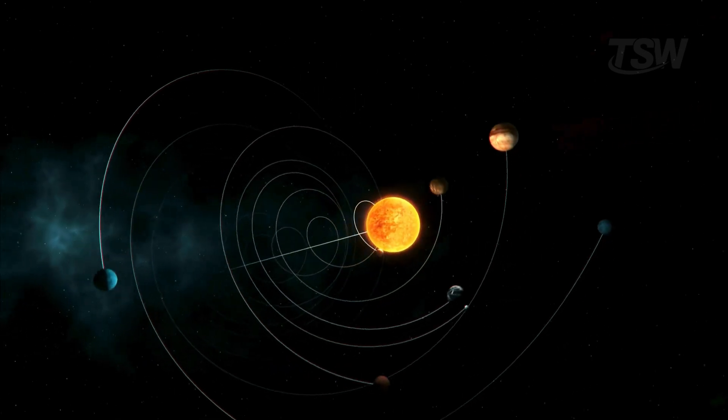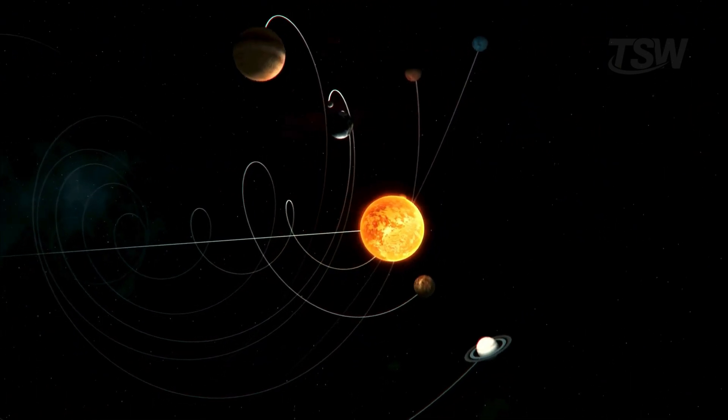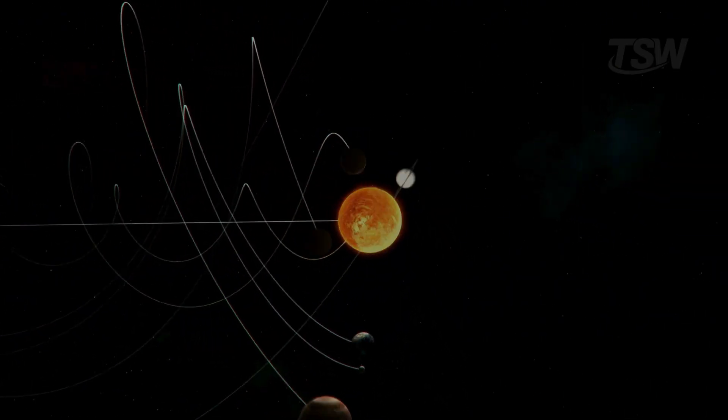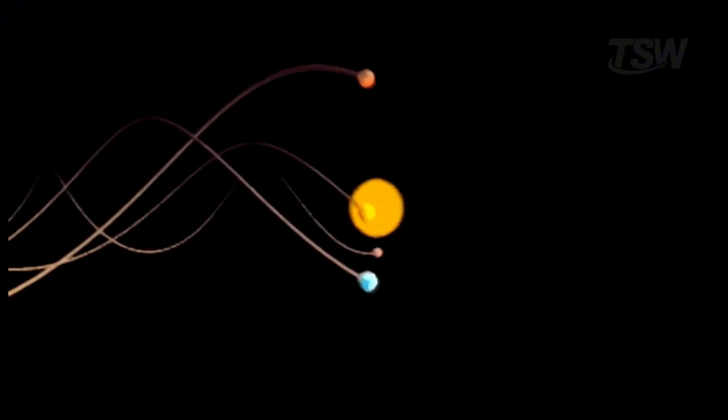And if the sun isn't still, then the planets aren't just spinning around it in circles. They're moving with it, following a three-dimensional cosmic dance that changes everything we imagined about the shape of our home in the universe.